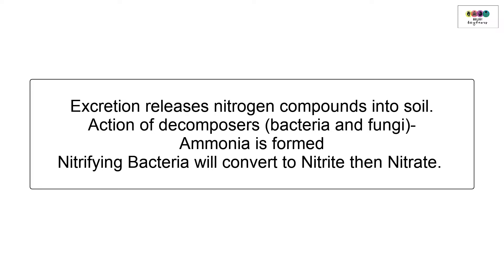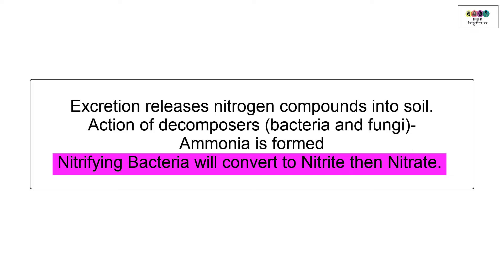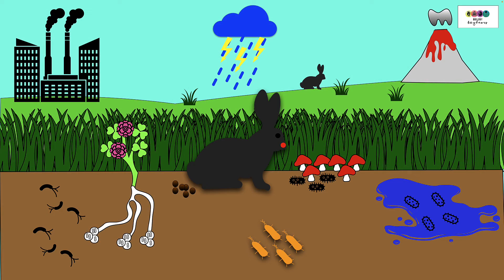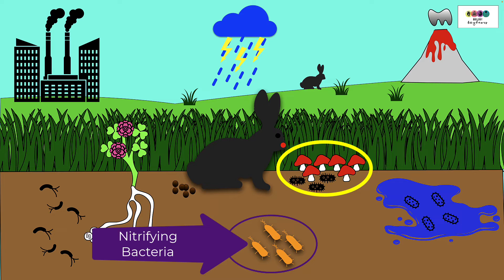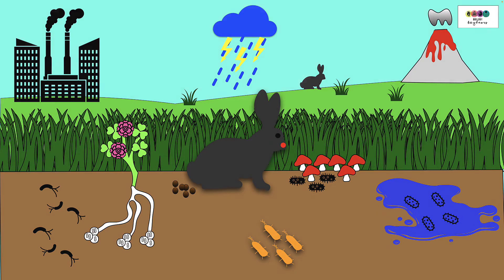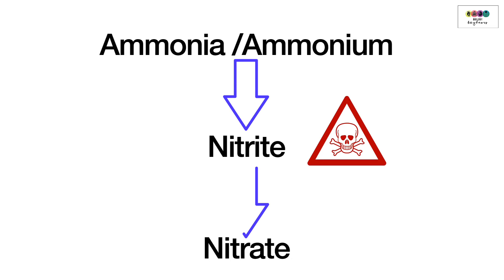Excretion releases many nitrogen-containing compounds into the soil, and the action of decomposers — bacteria and fungi — on these products and on dead plant and animal remains results in ammonia being formed. The nitrifying bacteria then convert this ammonia into nitrite and then nitrate. Note that nitrite is toxic to plants, which is why it must be converted to nitrate.